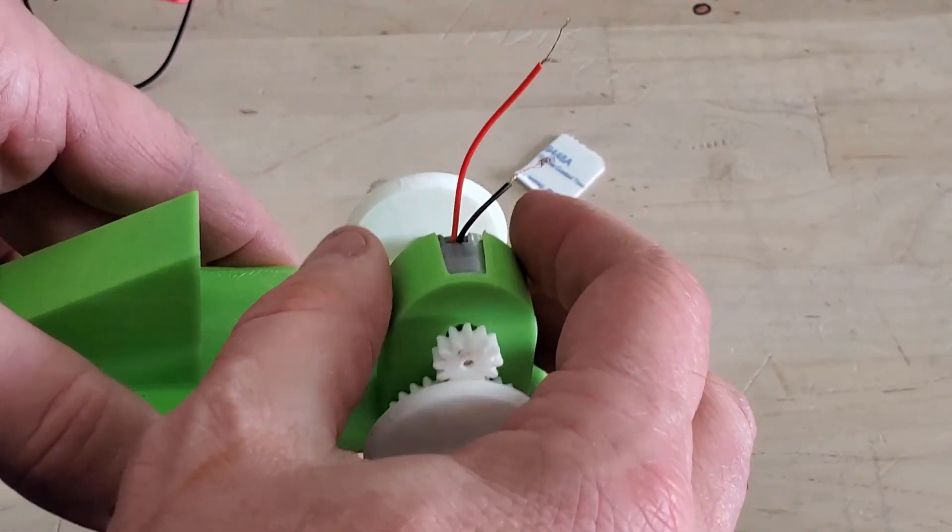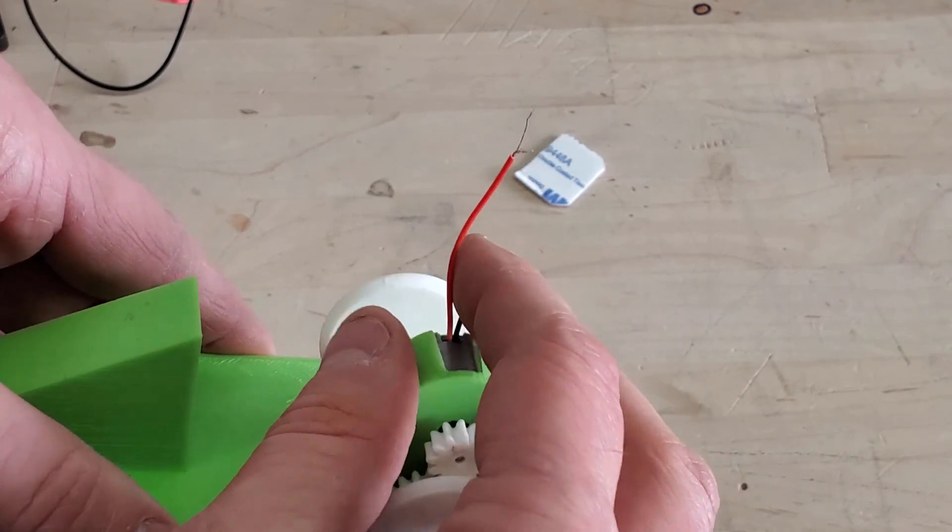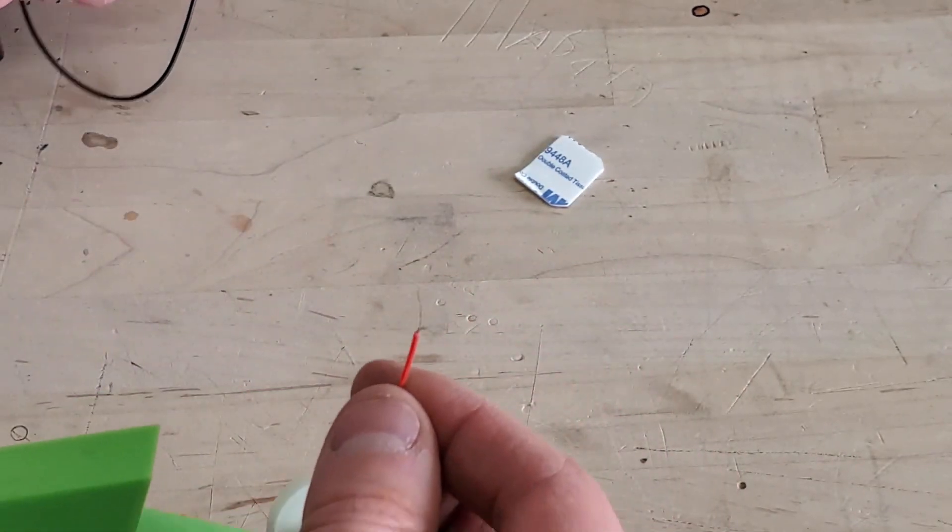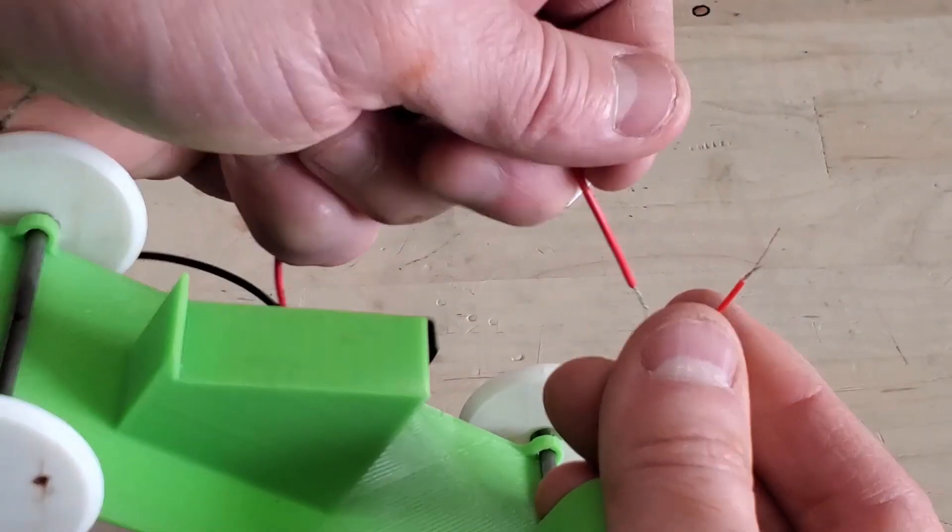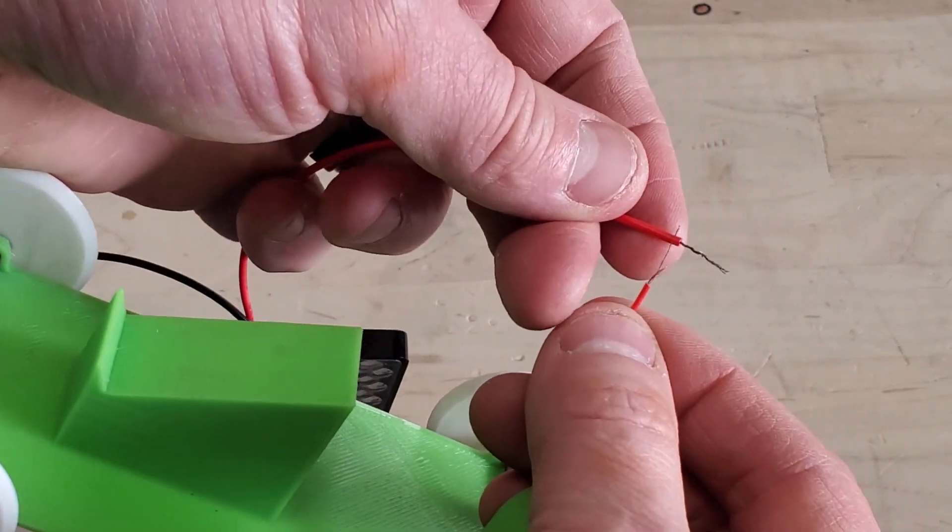The next thing we want to do is hook up our motor wires to our solar panel wires. Grab a red wire on your motor and the red wire on your solar panel, and cross them like so.